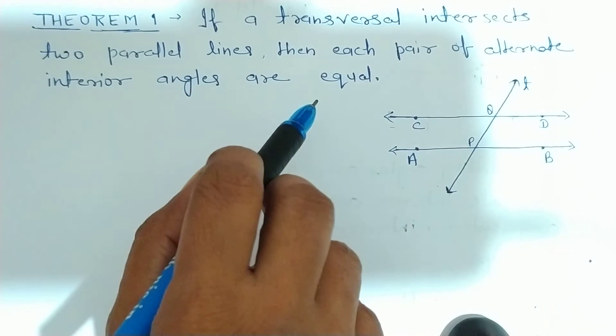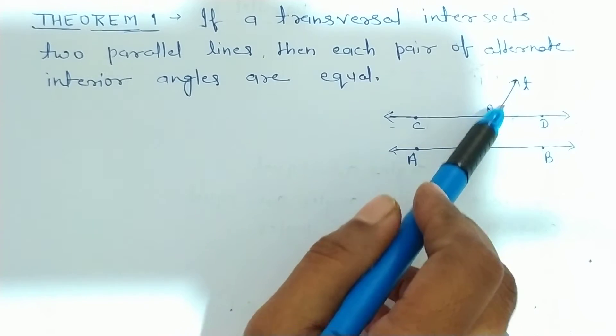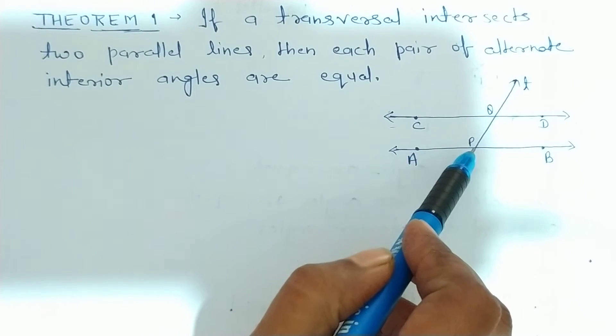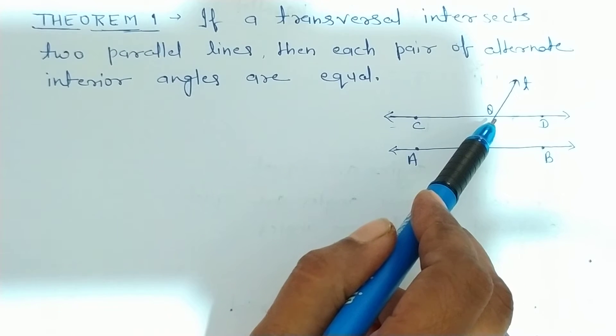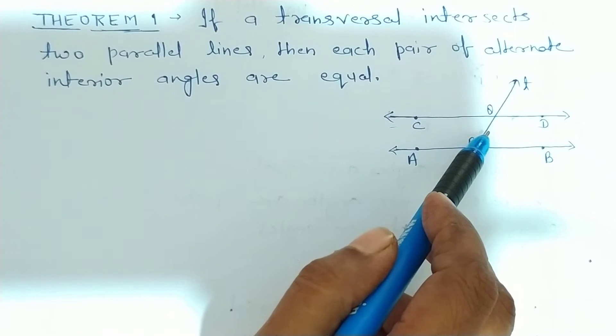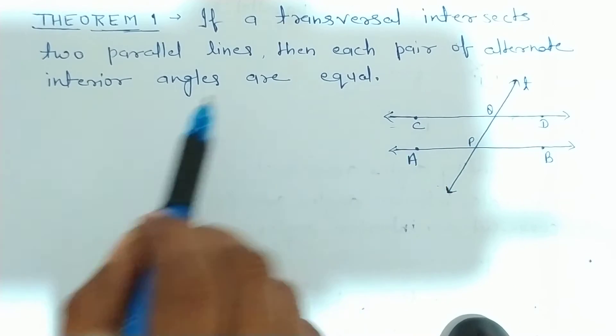Jaise maan lijiye ki yeh do parallel lines hain, AB or CD, or T ek transversal hai, jo AB ko P point pe, or CD ko Q point pe intersect karti hai.